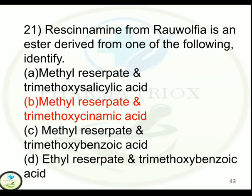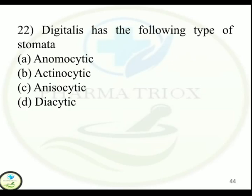Question 22: Digitalis has the following type of stomata — Option A: Anomocytic. Option B: Actinocytic. Option C: Anisocytic. Option D: Diacytic. Correct answer is Option A — Anomocytic.